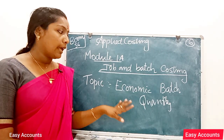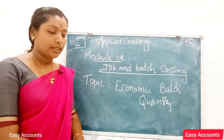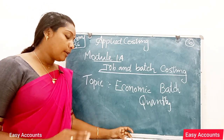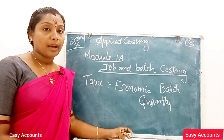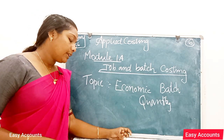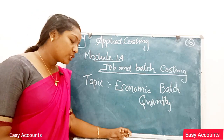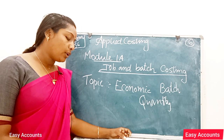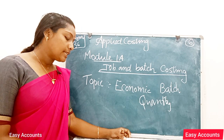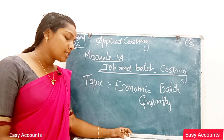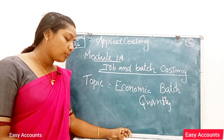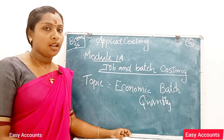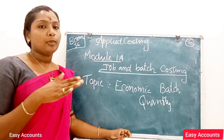This is an important topic called Economic Batch Quantity. Economic Batch Quantity refers to the optimum quantity batch to be produced at a point of time, so that the setting up cost, processing cost, and carrying cost are optimized, and the cost per unit produced is the lowest.